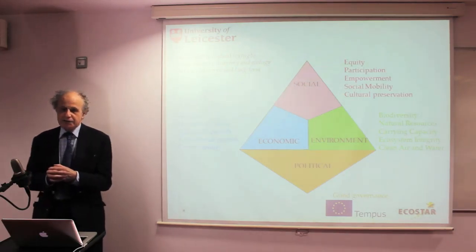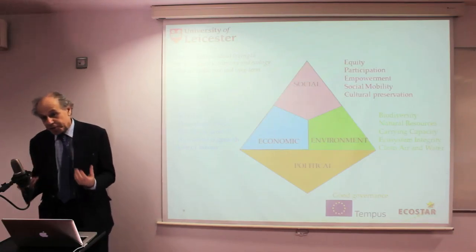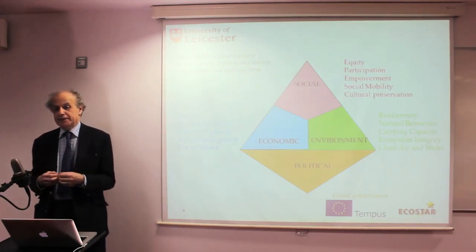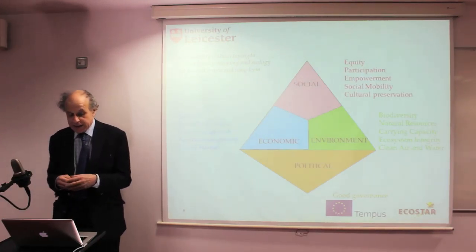Social aspects have to do with equity, justice, social mobility, education, and so on. Economic aspects, as you might expect, have to do with income, income inequality, access to basic standards of living, industrialisation, development of agriculture, and so on. And the environment, of course, has to do with biodiversity, the impact of economic growth on the ecology, on the sustainability of our environment.